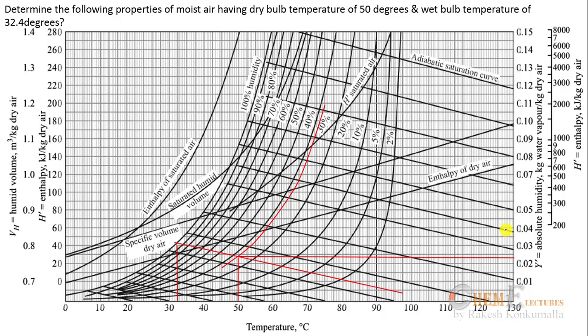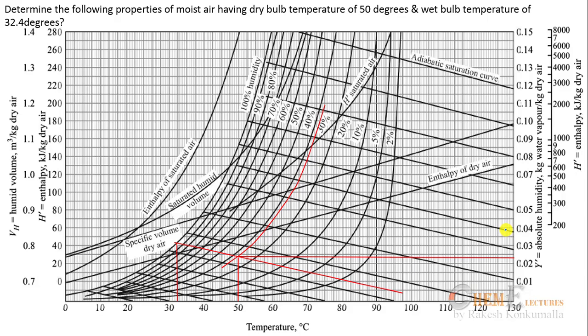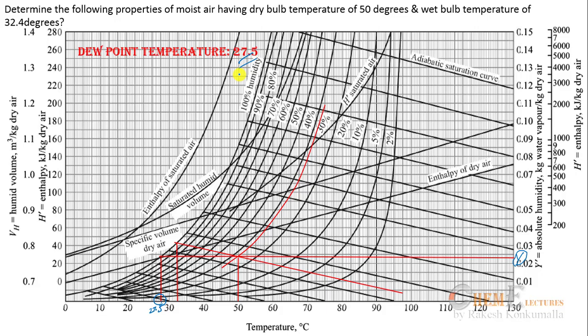Now finding dew point from the chart. I have the absolute humidity value; extending this line horizontally to the 100% humidity curve and then taking a vertical line down to the temperature x-axis gives the dew point temperature. This reads as approximately 27.5°C.